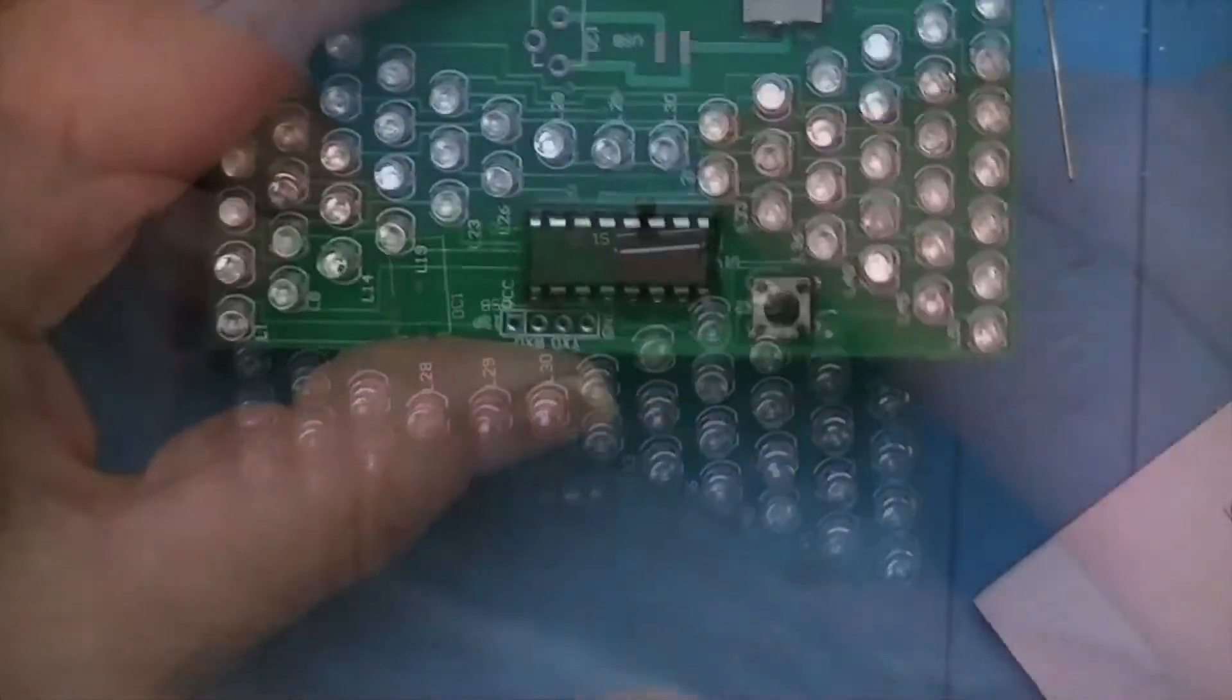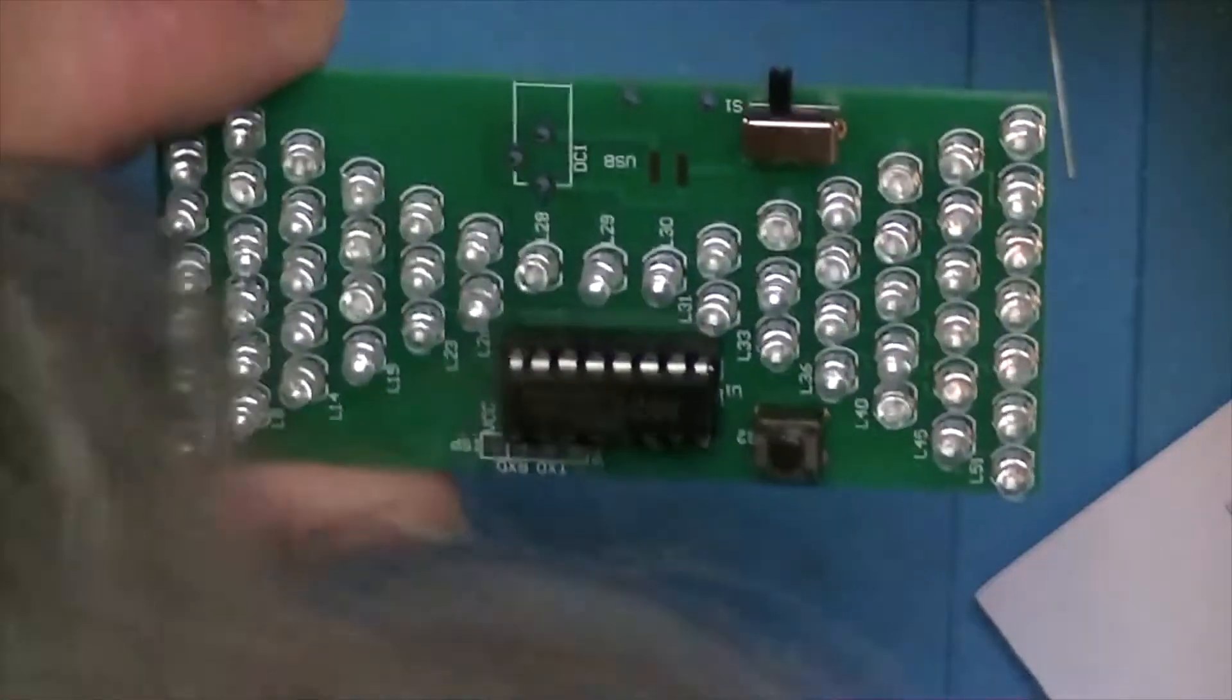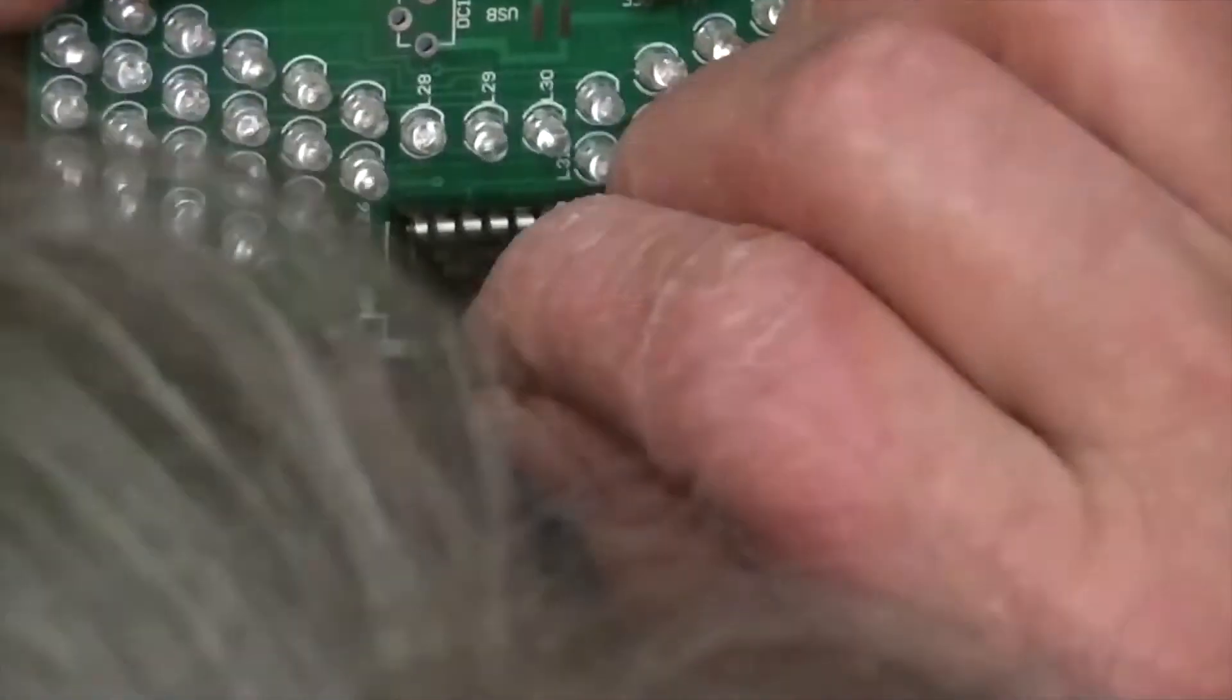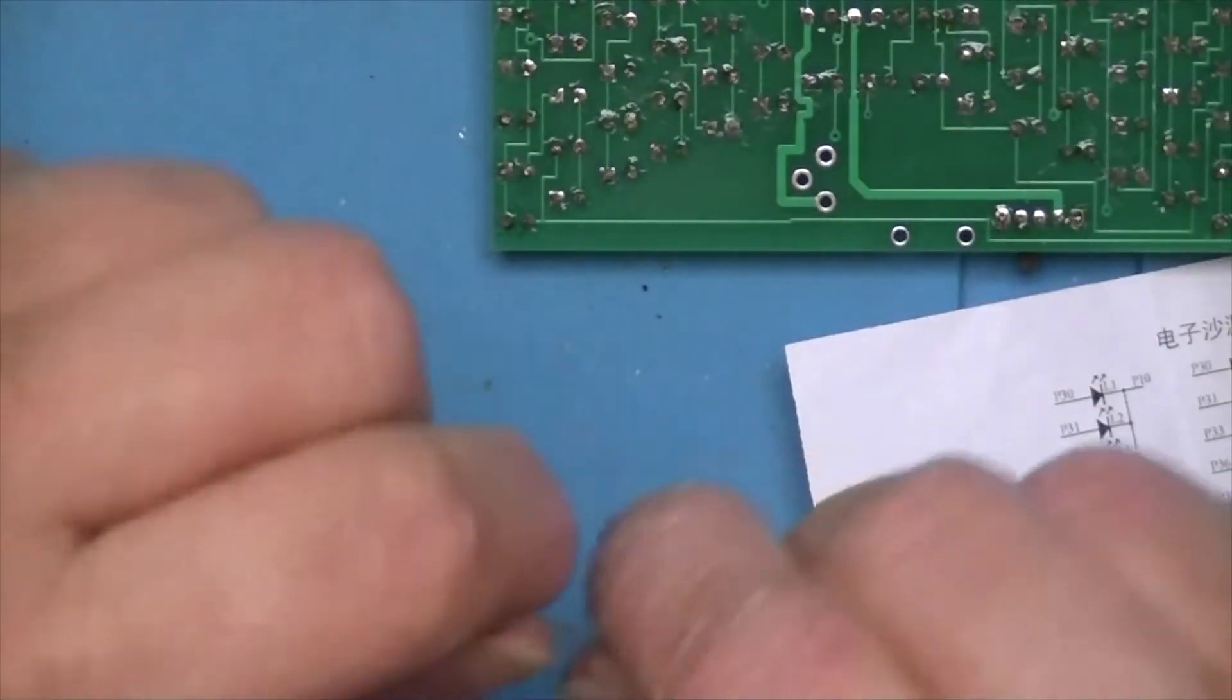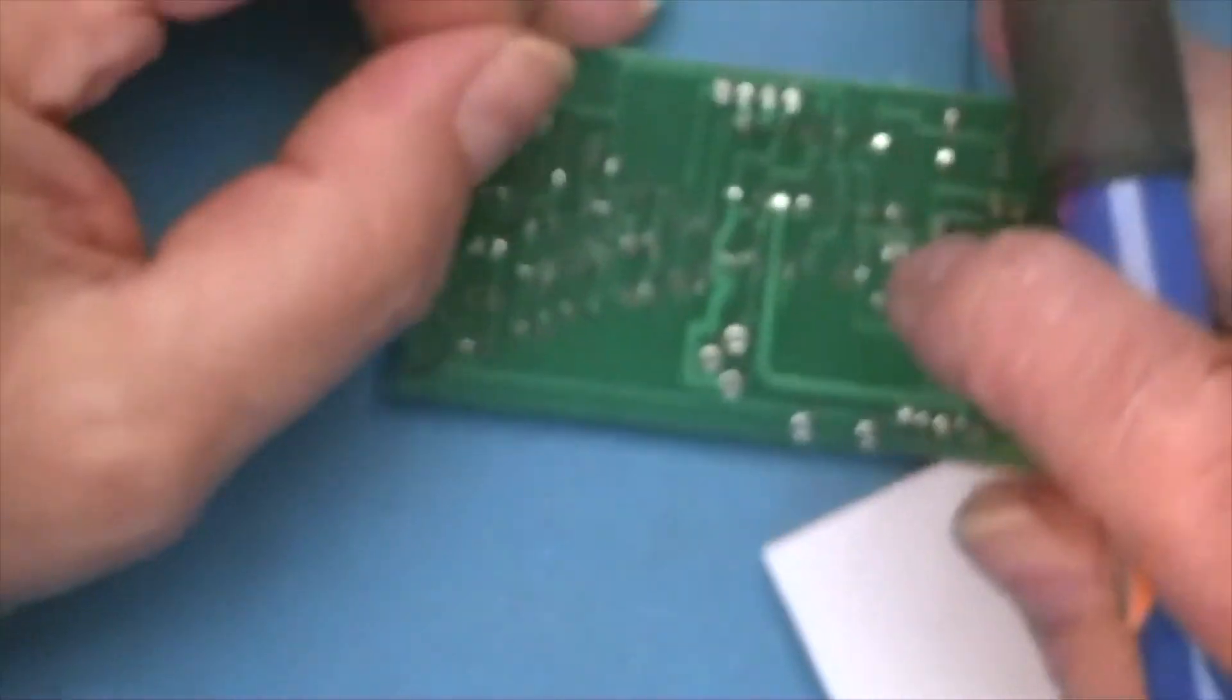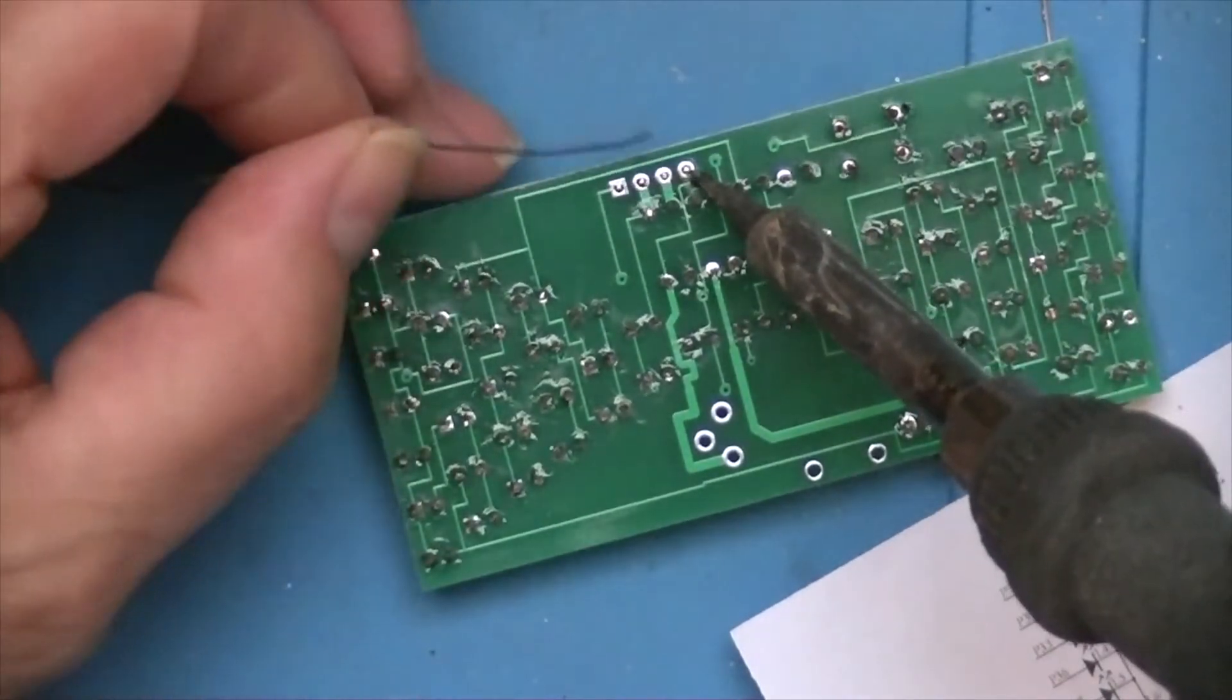Looks good. What else do we have here? We have this little ceramic capacitor that I thought was part of this. Let's take a look at the diagram. This thing certainly goes in here, so now we'll do that while we have it, solder that header in.